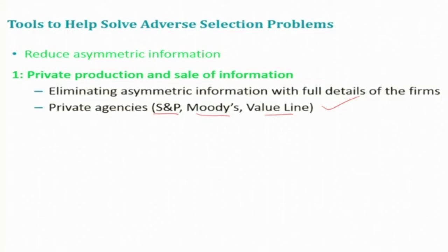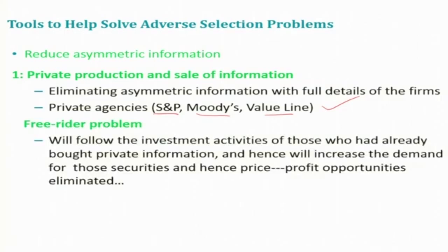However, the system of private production and sale of information does not completely solve the adverse selection problem in securities markets. Why? Because there is the free rider problem. The free rider problem occurs when people who do not pay for information take advantage of the information that other people have paid for. The free rider problem suggests that private sale of information is only a partial solution to the adverse selection problem.